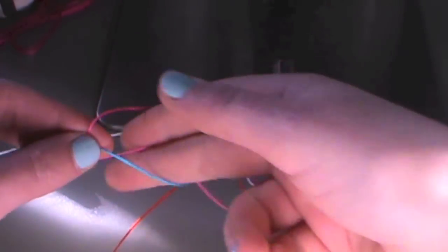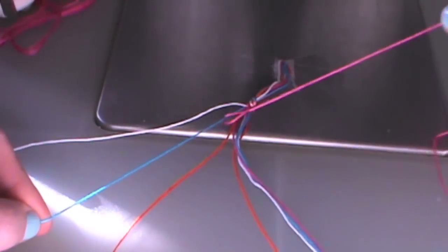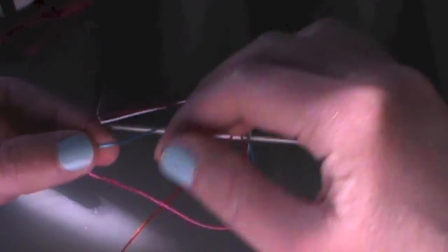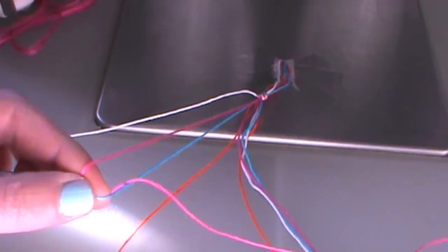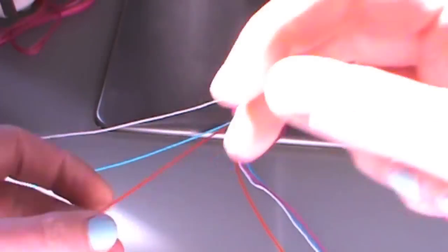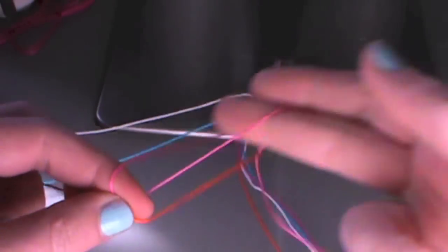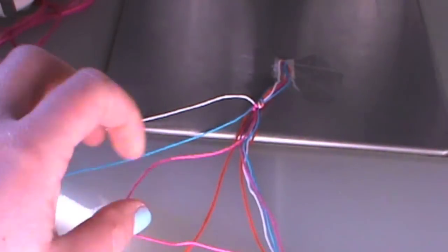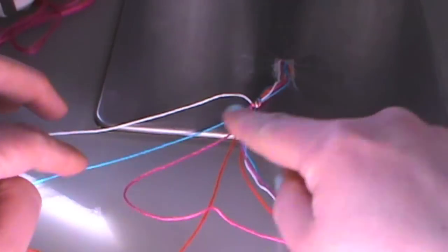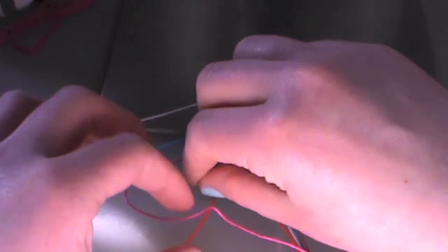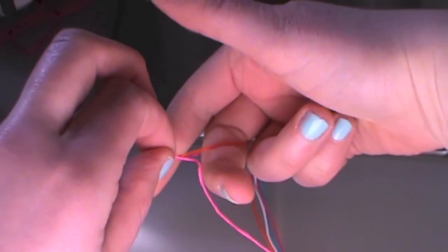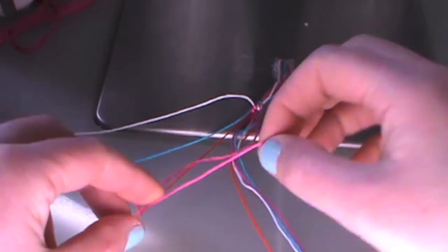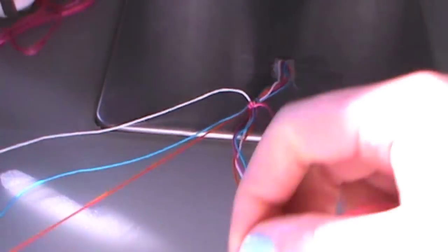Then you take your pink color and you do the same thing with the blue and the orange. So make a four, pull it through and knot. Make a four shape, pull it through, knot. Make a four shape—I hope you see what I mean with the four—pull it through and knot.